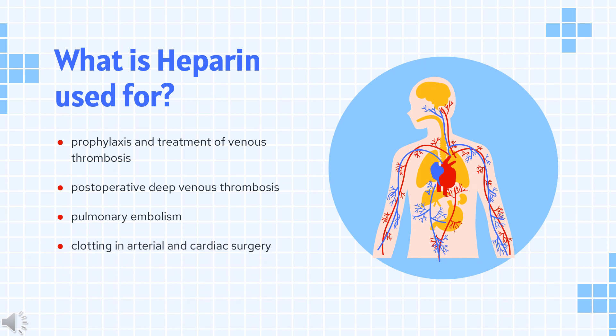What is heparin used for? Unfractionated heparin is indicated for prophylaxis and treatment of venous thrombosis and its extension, prevention of postoperative deep venous thrombosis and pulmonary embolism, and prevention of clotting in arterial and cardiac surgery.